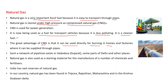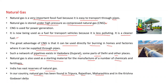Such a network of pipelines exists in Vadodara, Gujarat, and some parts of Delhi and other places. Natural gas is also used as a starting material for the manufacture of a number of chemicals and fertilizers. India has vast reserves of natural gas. In our country, natural gas has been found in Tripura, Rajasthan, Maharashtra, and in the Krishna-Godavari delta.